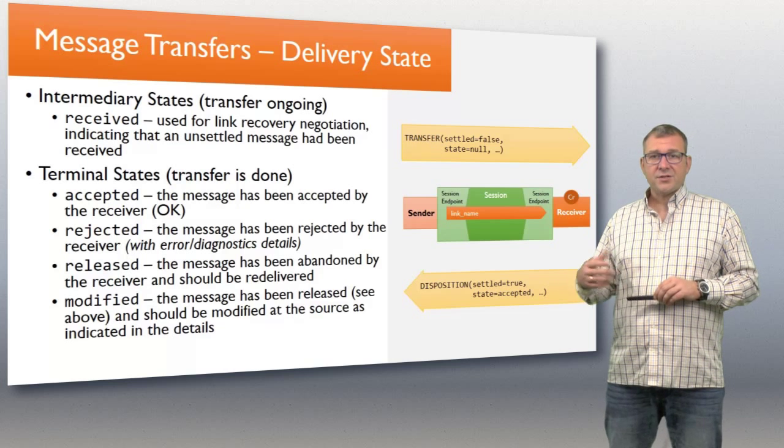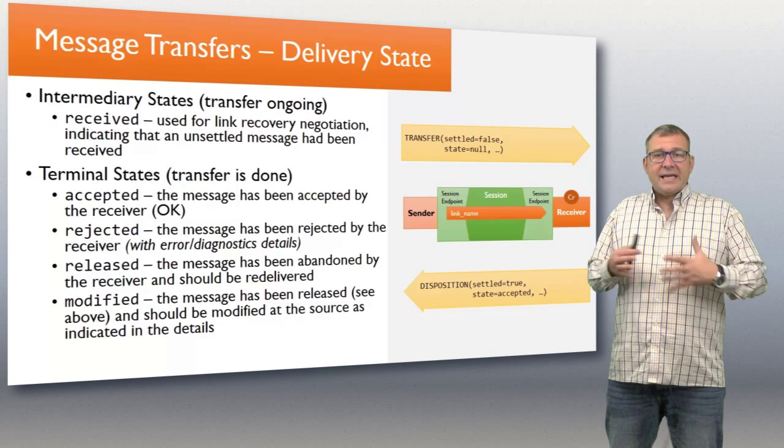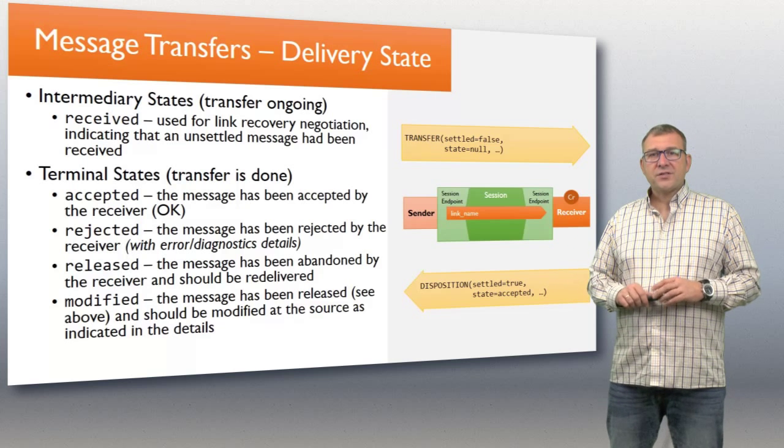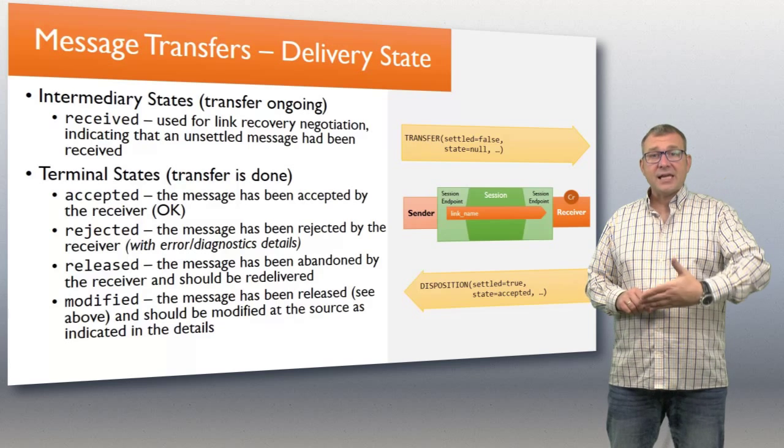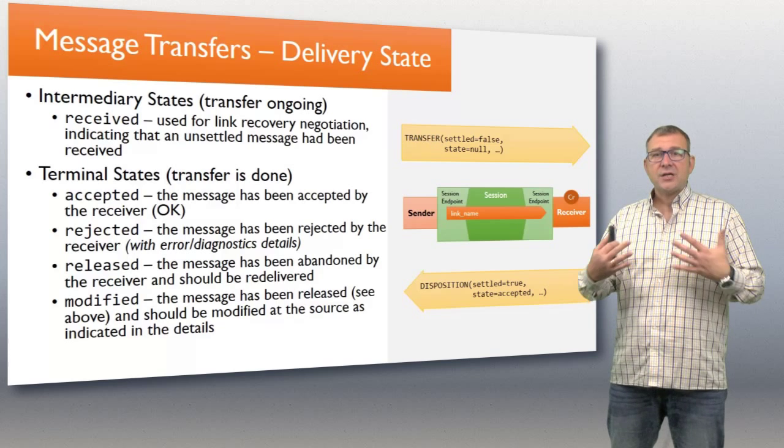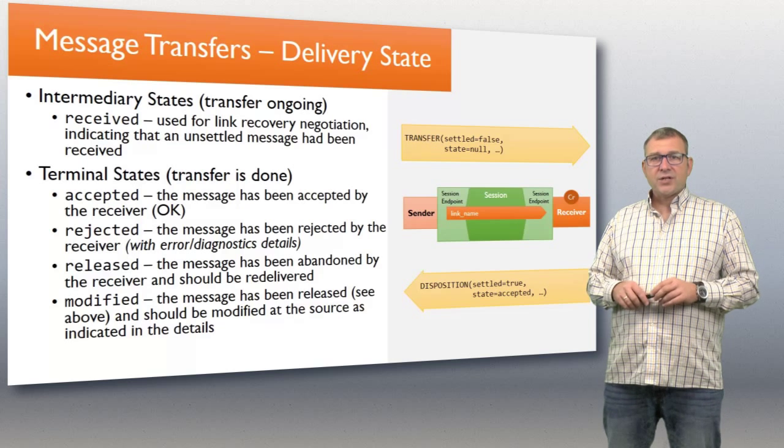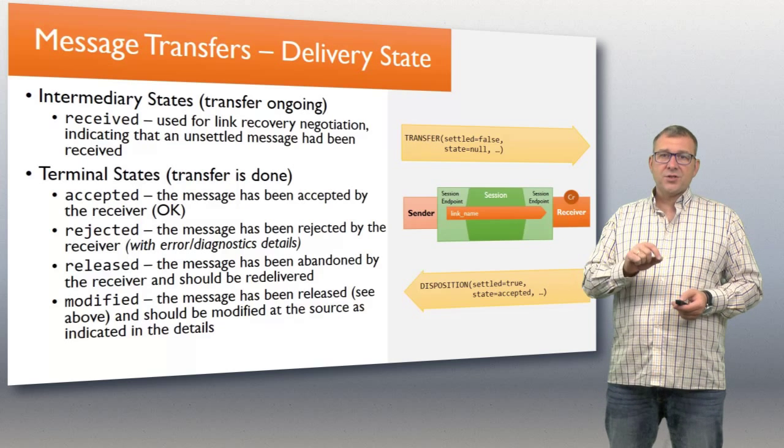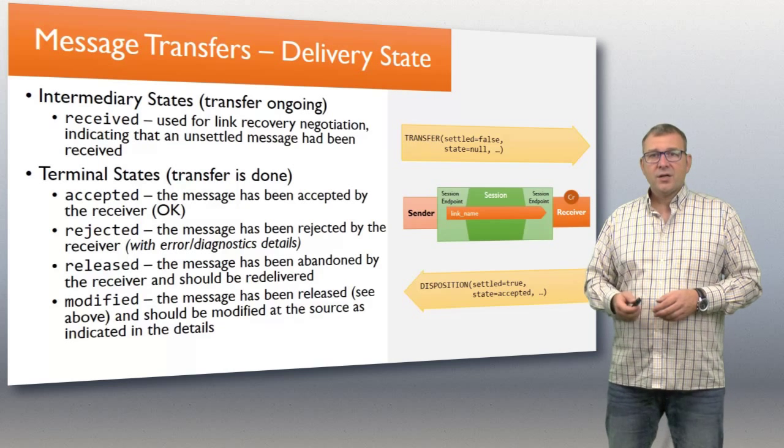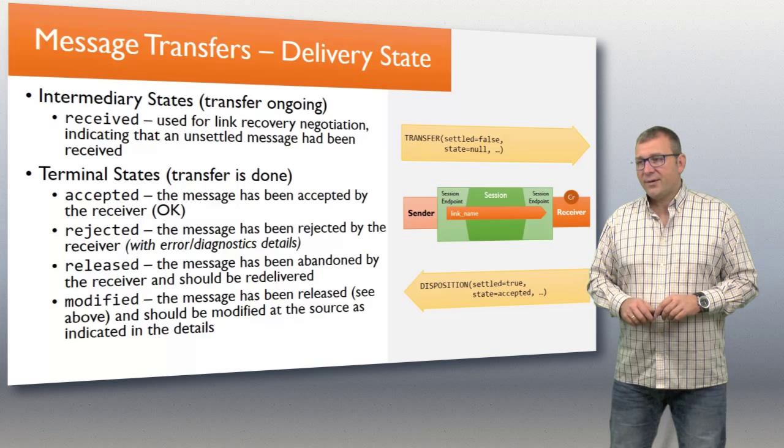It might be released. The receiver got the message but it timed out when trying to do the work, or for some other reason can't deal with that message right now. The message is just being released, which means for the sender it's now okay to redeliver that message again to the same receiver or to another receiver that's also asking for messages concurrently from the same messaging entity. Then there's modified, which is effectively a release but also carries information for the message, like manipulations on that message, changes to that message, back to the client. The client is now free to take those edits and apply them to that message.